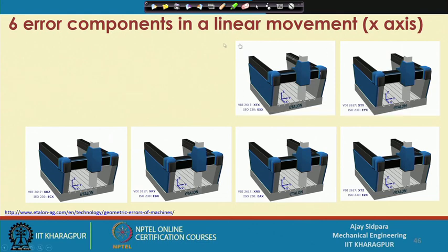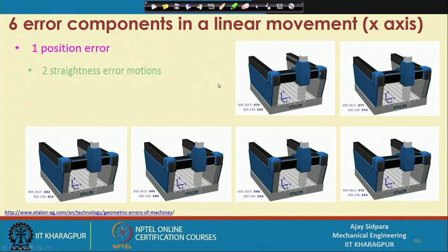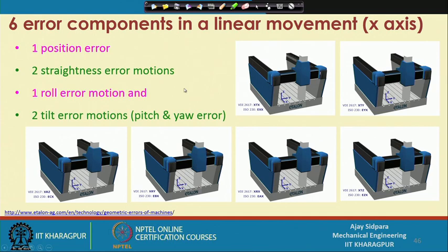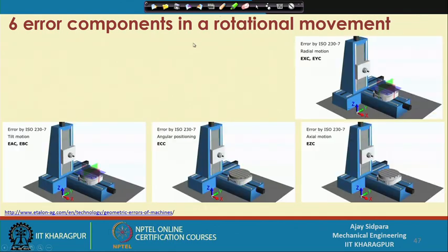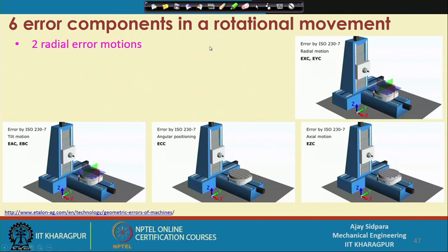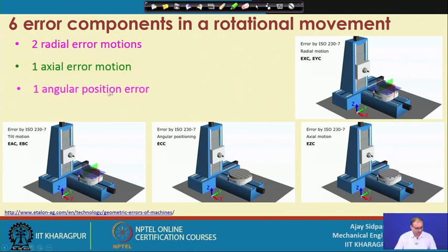We have seen in the last class about the x-axis error components when it is moving in the linear direction, that is the x-axis. We found that one was the position error, two was the straightness error, one was the roll error, and two are the tilt errors. Similar to that, when you attach one rotational axis around the z-axis, you can end up with some more errors in the same rotational motion — two radial errors, one axial error, one angular position error, and two tilt errors.